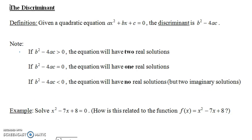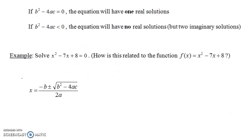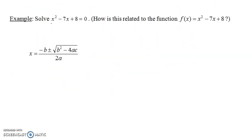Let's look at an example to understand why this theorem is true. Let's solve x² - 7x + 8 = 0, and then we'll think about how this is related to the function f(x) = x² - 7x + 8. Notice we have x² - 7x + 8 in both places — on the left, a quadratic equation; on the right, a quadratic function.